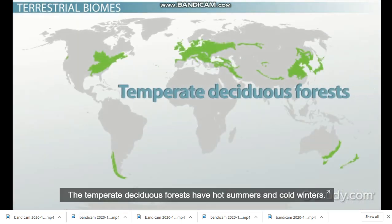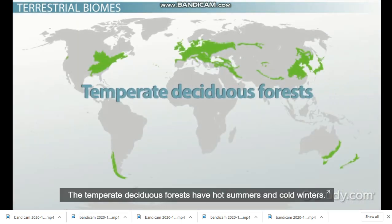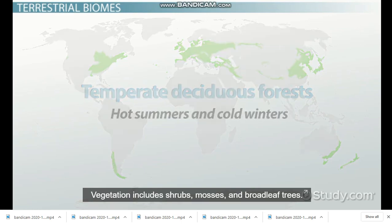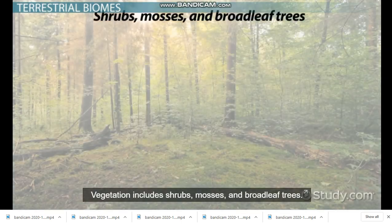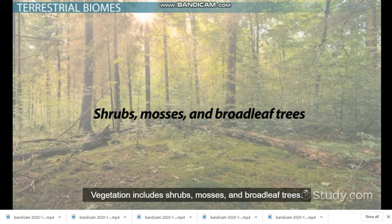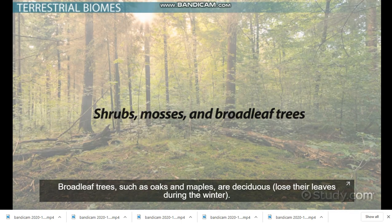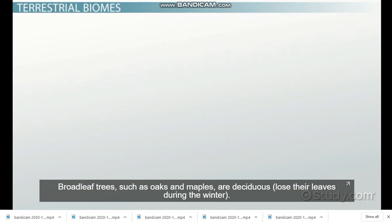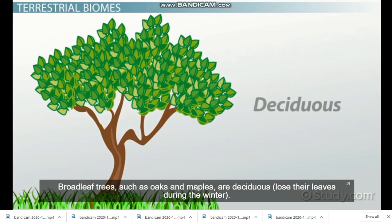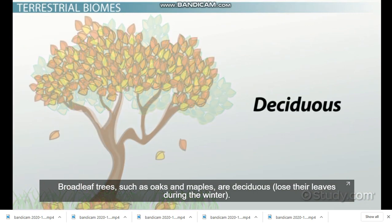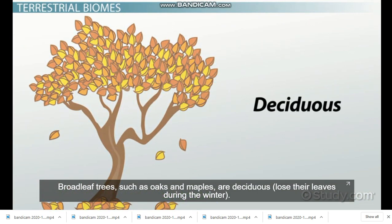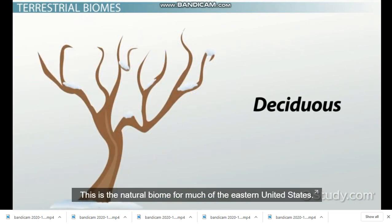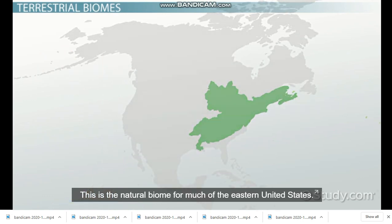The temperate deciduous forests have hot summers and cold winters. Vegetation includes shrubs, mosses, and broadleaf trees. Broadleaf trees such as oaks and maples are deciduous and lose their leaves during winter. This is the natural biome for much of the eastern United States.